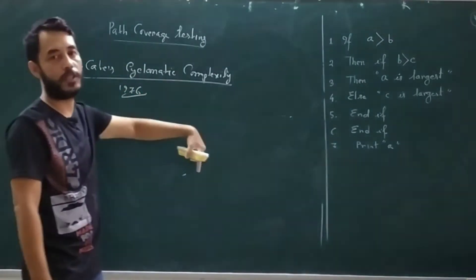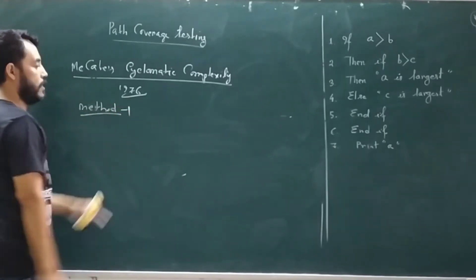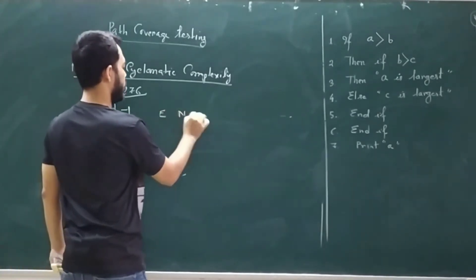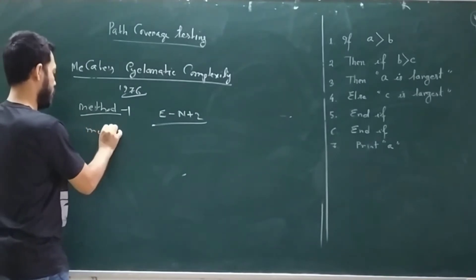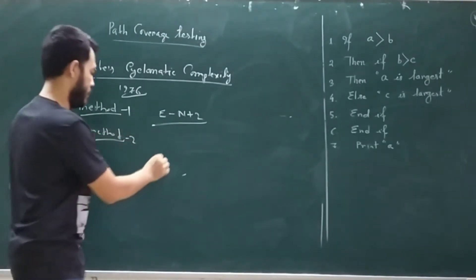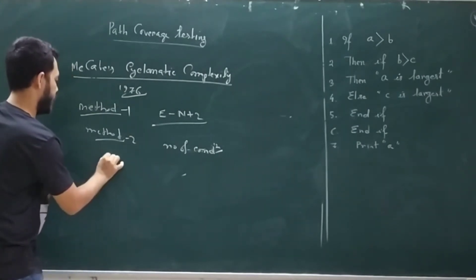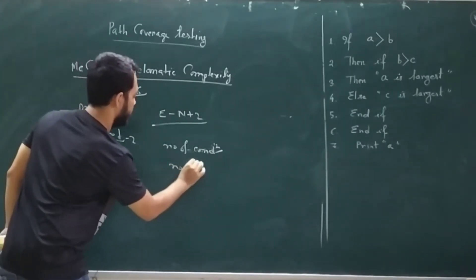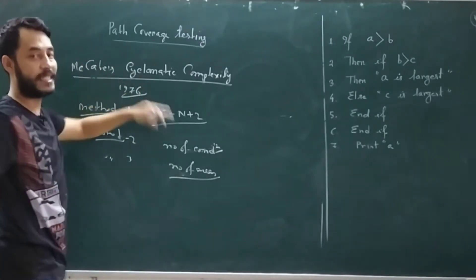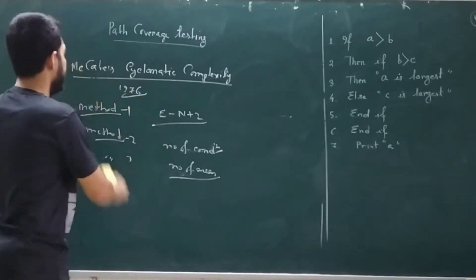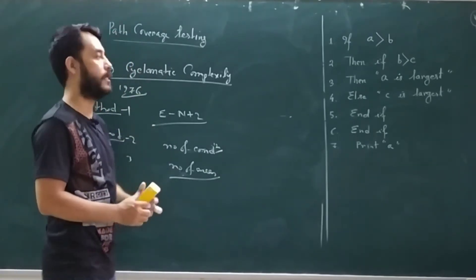There are different methods to find cyclomatic complexity — the link is given in the description. Method one depends on the number of edges and number of nodes. Method two depends on the number of conditions in the program. Method three uses the number of regions. You can use any of these methods to find the cyclomatic complexity as part of the path coverage technique.